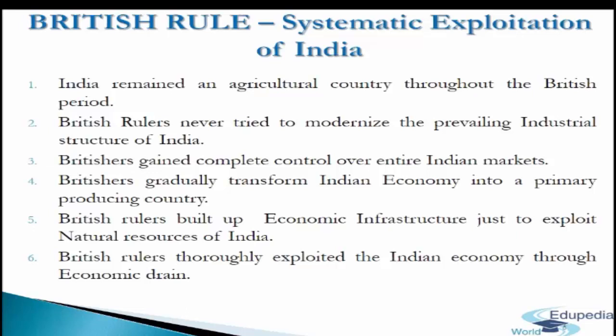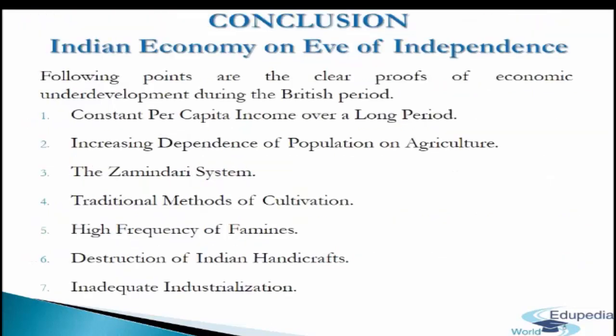Next point: to promote foreign trade and to exploit natural resources of India to their advantage, British rulers built up economic infrastructure which includes roads and railway network, ports and shipping, irrigation and electricity etc. The last point is that British rulers thoroughly exploited the Indian economy through economic drain. The aforesaid exploitative policies of the British rulers resulted in large scale poverty, stagnation and backwardness of the Indian economy, along with a huge drain of economic resources of the country to Great Britain.